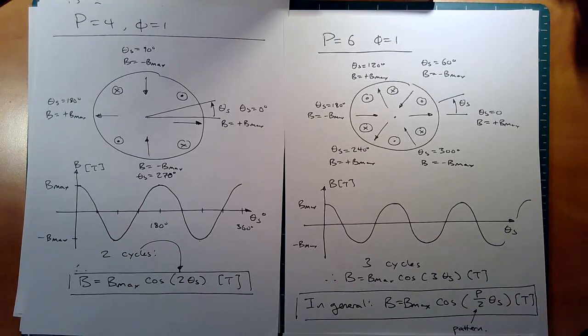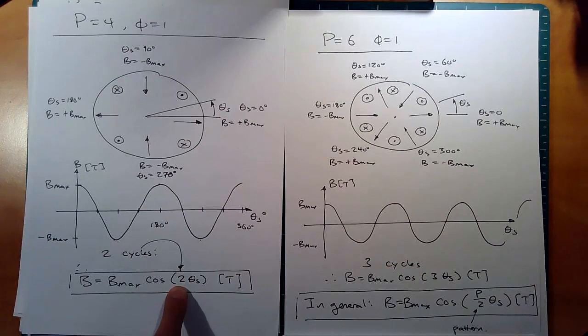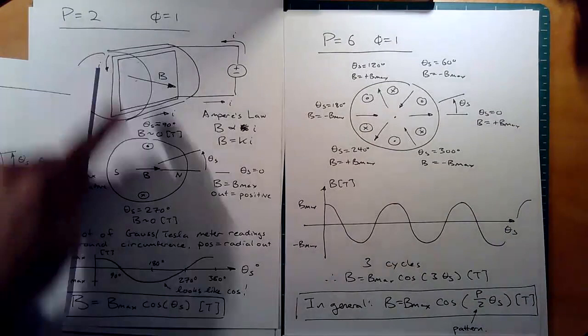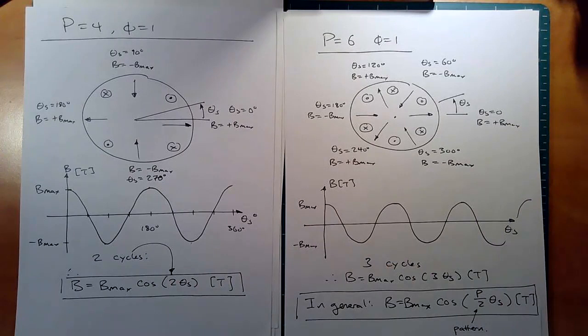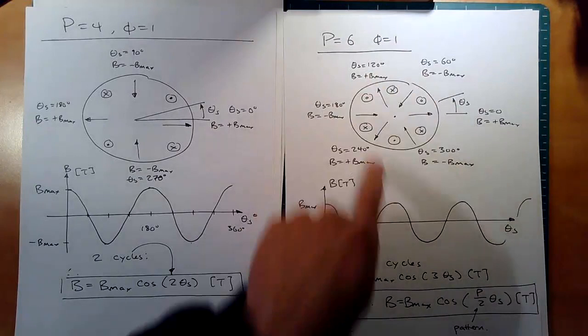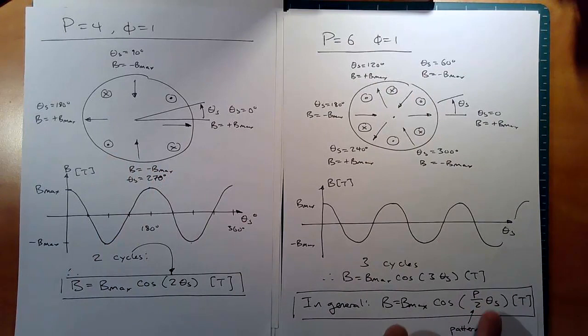You can see the pattern works: six poles gives 6/2 = 3, four poles gives 4/2 = 2, two poles gives 2/2 = 1. So in general, for a static single-phase system, the mathematical equation for B as a function of position around the stator is: B = B_max * cos(p/2 * θ_s), where B_max is related to Ampere's law.